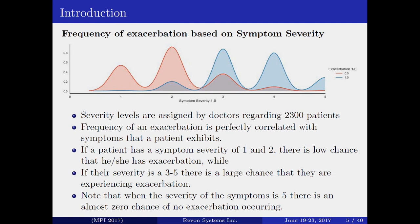This is one of the studies we did. The x-axis represents the severity level given by the doctor, and the y-axis shows the frequency of exacerbation. What you can observe is how reliable the doctor was. If the severity level is 1 or 2, the orange peak represents zero frequency of exacerbation. The blue peaks at severity levels 3 and 4 correspond to frequency 1 — meaning there was an exacerbation. This was done in Python.